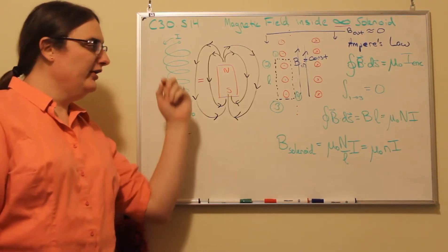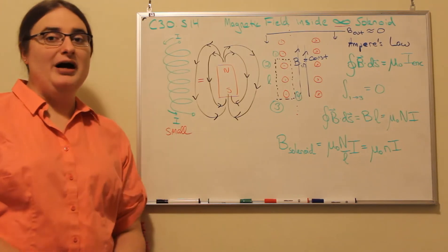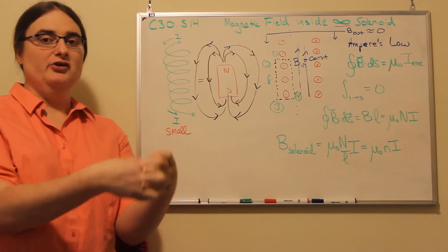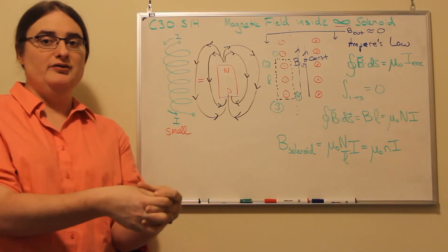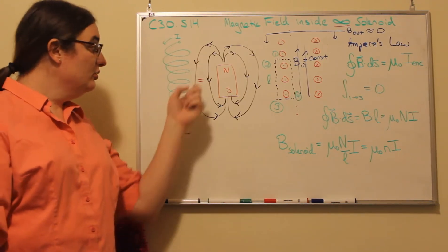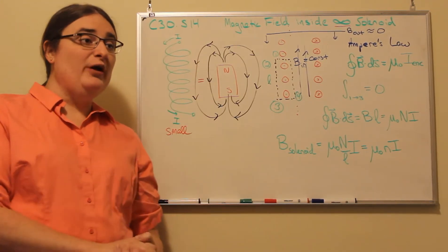A solenoid is just a helical coil of wire where the windings, instead of being over top of each other like a traditional loop or coil of wire, are spread out in space.